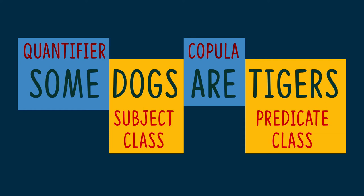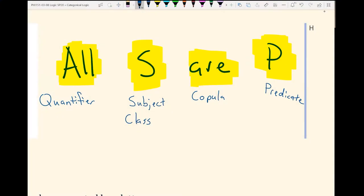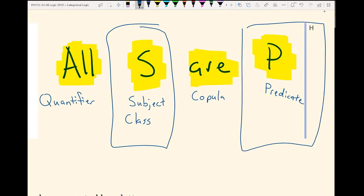Let's recap categorical statements. Each one has four parts: the quantifier, the subject class, the copula, and the predicate class. We're going to introduce a new term in a little bit, and we will end up renaming the subject class and the predicate class. You'll see why we need to do that in just a little bit. But here's our basic parts.